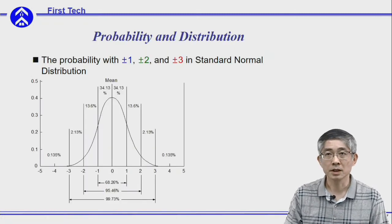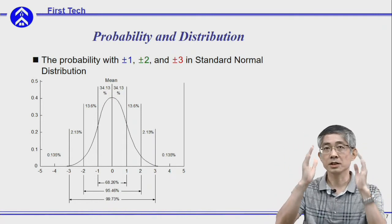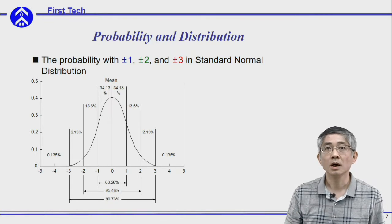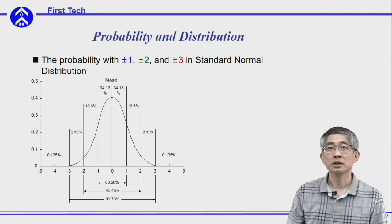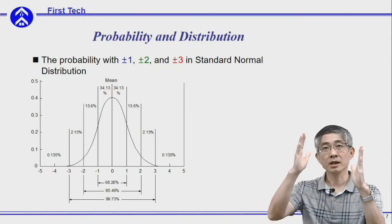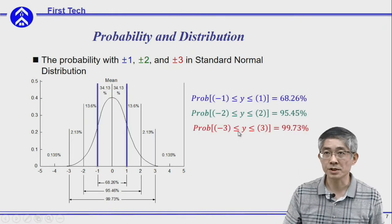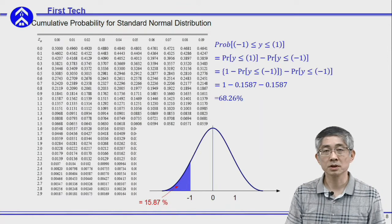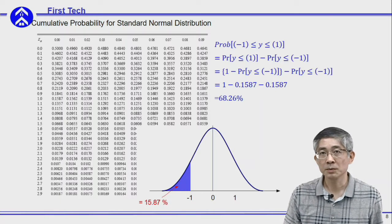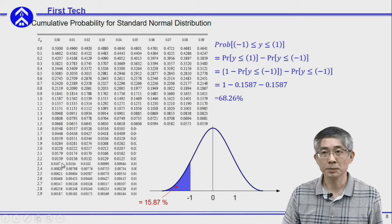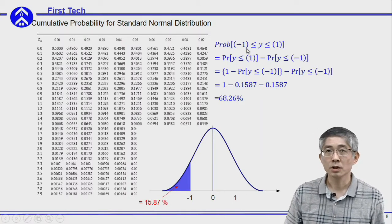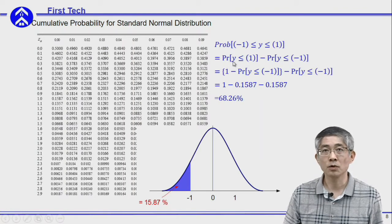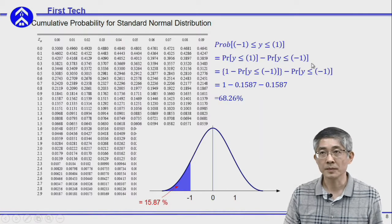In quality control, there is a very good chance you want to find the probability of your distribution within a certain range, especially within a multiple of standard deviations. For the standard normal distribution, the standard deviation is 1. So to find the probability for z within 1 and minus 1, you can use the previous table. The probability for y between 1 and minus 1 equals the cumulative probability for y smaller than 1, minus the cumulative probability for y smaller than minus 1.